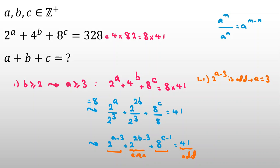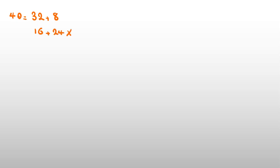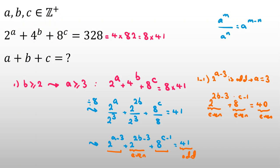With A equal to 3, that term becomes 1. Subtracting 1 from both sides: 2 to the (2B minus 3) plus 8 to the (C minus 1) equals 40. We need to express 40 as a sum of powers of 2. The only valid split is 32 plus 8. Since 8 to the (C minus 1) cannot be 32 as C must be an integer, that term must be 8, so C minus 1 equals 1, giving C equals 2.